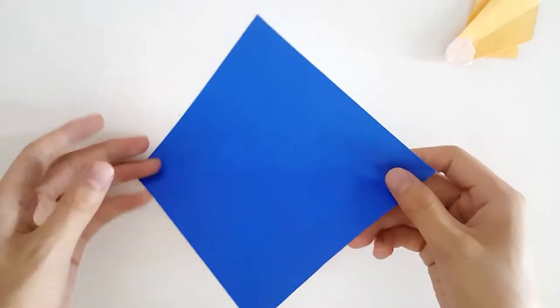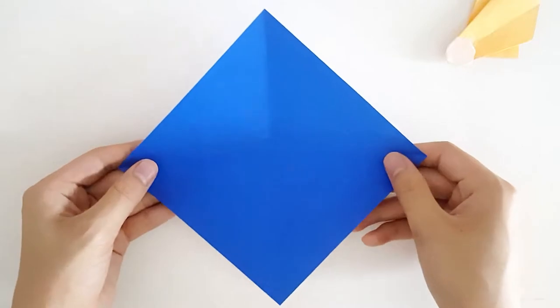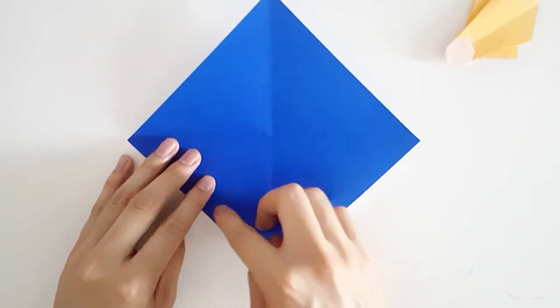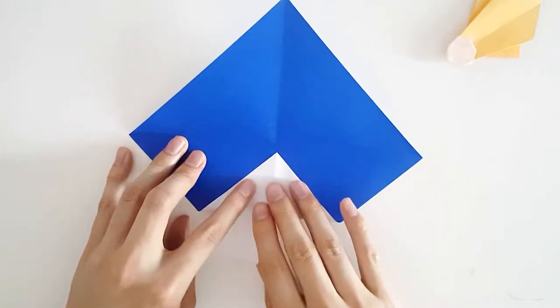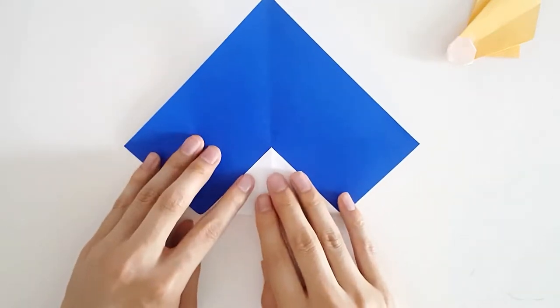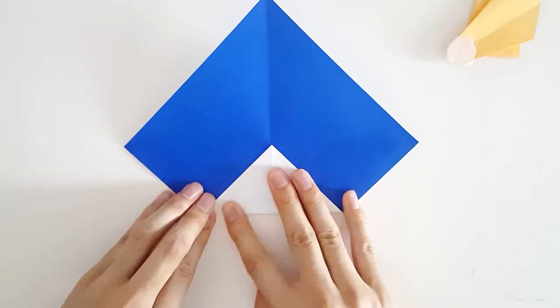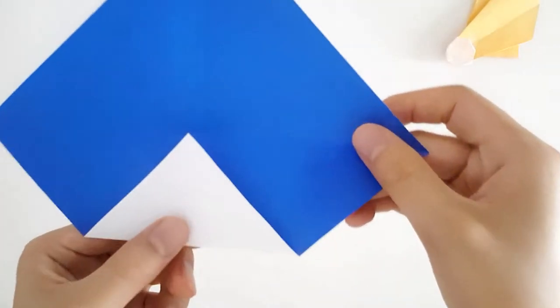Now we have a cross. What we want to do is get the bottom corner, and we're going to fold it up into a triangle, making sure it doesn't go past the center. We want to fold it up to the cross point. Looks like this.